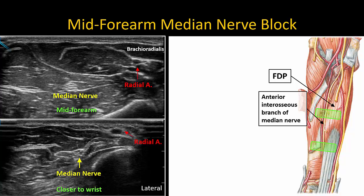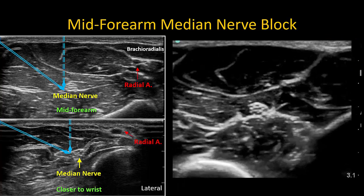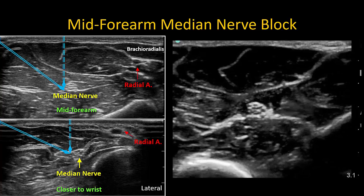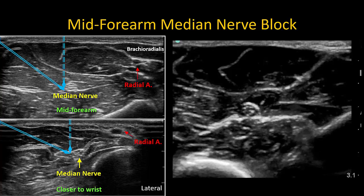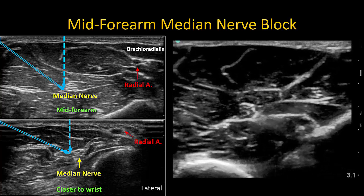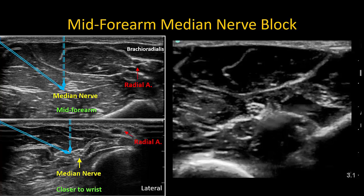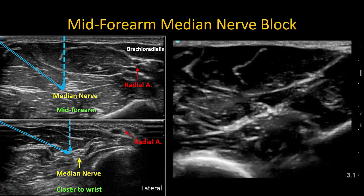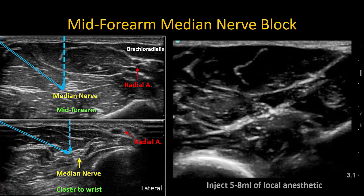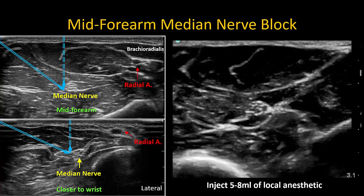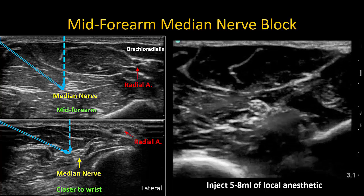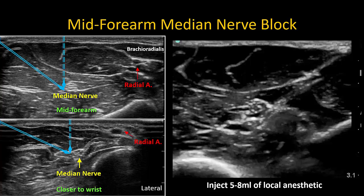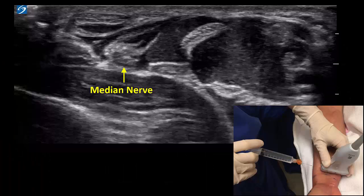The nerve may be blocked using an in-plane or out-of-plane approach, advancing the needle tip at a tangent to its surface to avoid piercing it. Inject into the fascial sheath that surrounds the nerve. Five to eight milliliters of local anesthetic is sufficient.